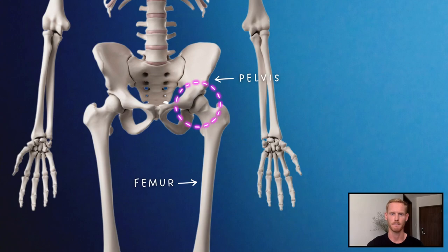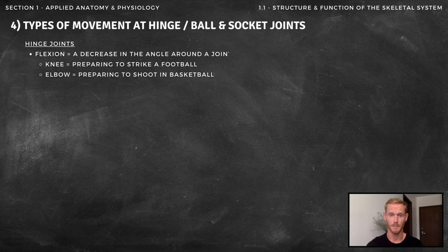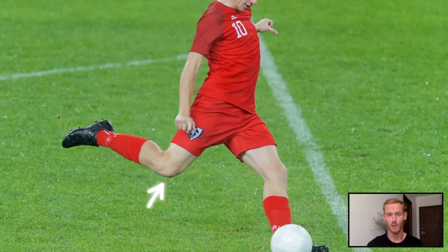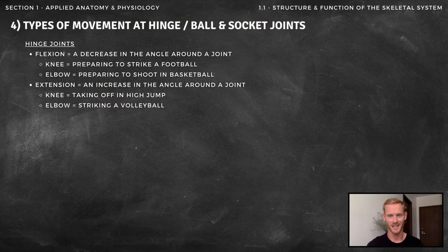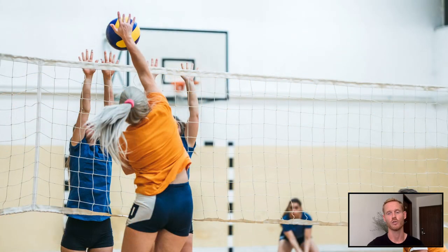Moving on to the types of movement possible at both hinge and ball and socket joints — hinge joints are only capable of flexion and extension. Flexion is a bending motion defined as a decrease in the angle around a joint. It occurs at the knee when preparing to strike a football, and at the elbow when preparing to shoot in basketball. Extension is a straightening motion where the angle around a joint increases. It can be seen at the knee when taking off in high jump, and at the elbow when striking a volleyball.